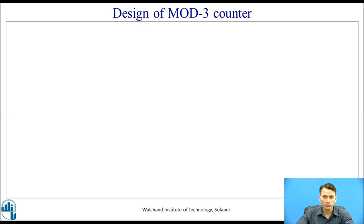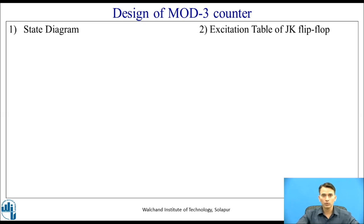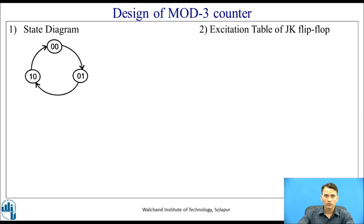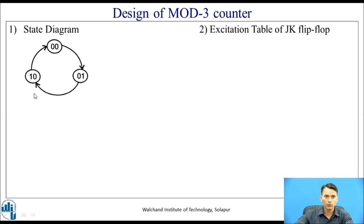Let us design a Mod-3 counter. A Mod-3 counter goes through 3 different states. For 3 states, we require at least 2 flip-flops because 2^2 gives us 4 different states. The states are 00, 01, and 10. If the counter is in state 00, the next state is 01; when in 01, the next state is 10; and when in 10, the next state returns to the starting state 00. Based on this state diagram, we write the state table. But before that, we write the excitation table.